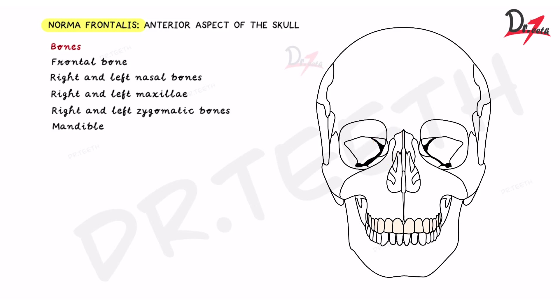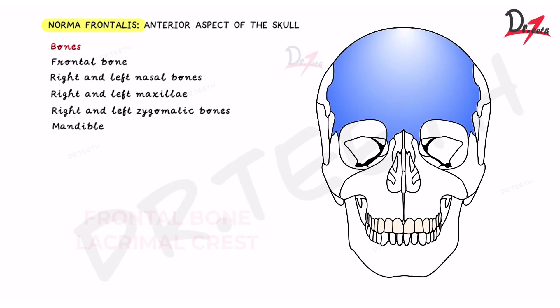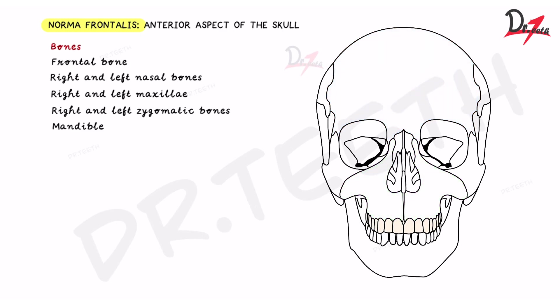The medial orbital margin is not as well defined as the other margins. On the medial surface you will find a slight depression rather than a prominent elevation. It is formed by the frontal bone above and the lacrimal crest of the maxilla below.